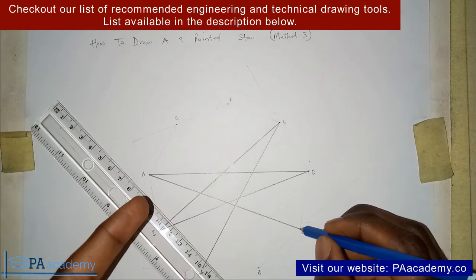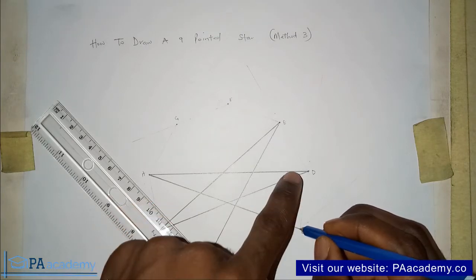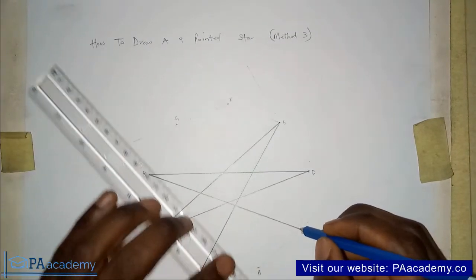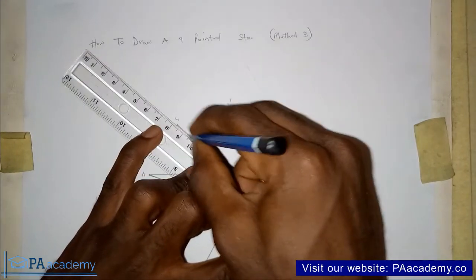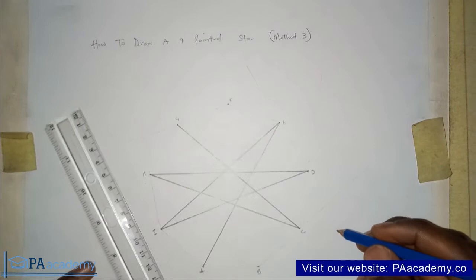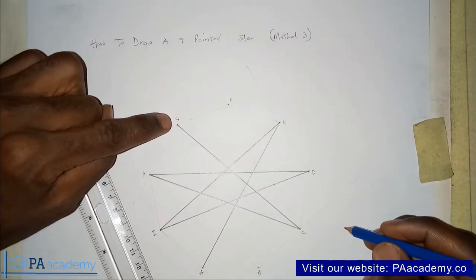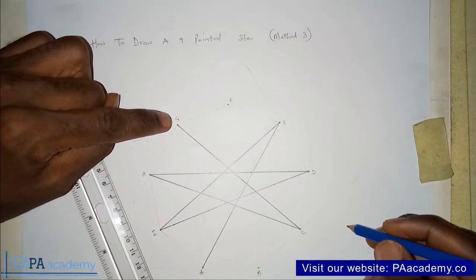Now from C, definitely where are we going next? We are going to be skipping this, this, and this. We are going straight to G. I want you to look at it. Now we stop at G. Where do you think the next line we are going to be drawing to? Which of the vertex are we drawing to?